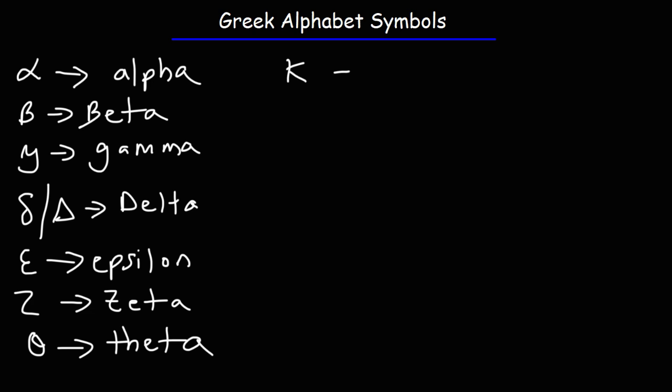The next symbol is kappa and this one you've seen it in chemistry or physics. This is lambda. In chemistry this would be the wavelength of a wave, and the same is true in physics.